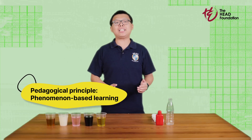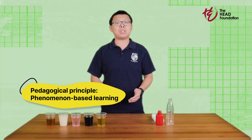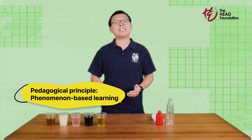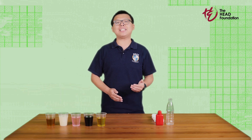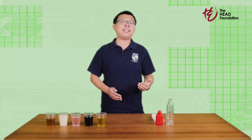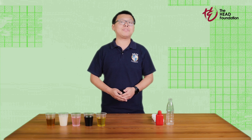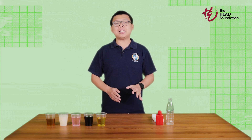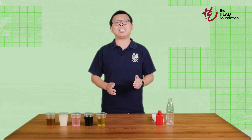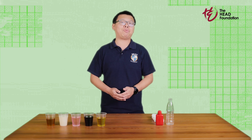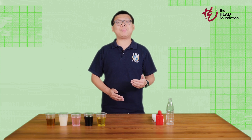This lesson exemplifies phenomenon-based learning. By creating a density column with students, we aim to spark their interest and encourage them to ask crucial investigative questions about why these phenomena occur in their daily lives. This learner-centred approach introduces scientific concepts in a way that makes science come alive in front of their students, prompting them to think about the science behind everyday phenomena.